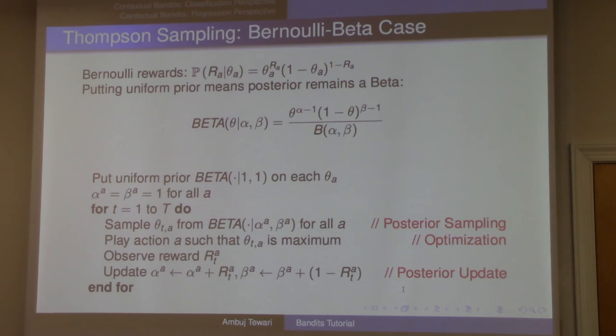In the open problem track they said that in our experiments Thompson's sampling works great, and we know that applied people know about this idea and they use it, but we don't know much about this algorithm. Like does it have the same kind of logarithmic regret bound that UCB has? Once it was stated as an open problem, it turned out that we had the tools to understand, it's just that the question had not been asked. So immediately within a couple of years there was significant progress in understanding what kind of regret properties this Thompson's sampling algorithm has.